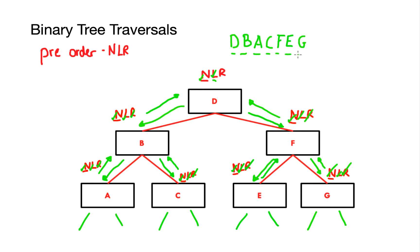The pre-order traversal for this tree is D, B, A, C, F, E and G — and that's all there is to a pre-order traversal. The only thing to remember for your exam is node-left-right. The pre-order traversal should always have the node in the first position of the list.